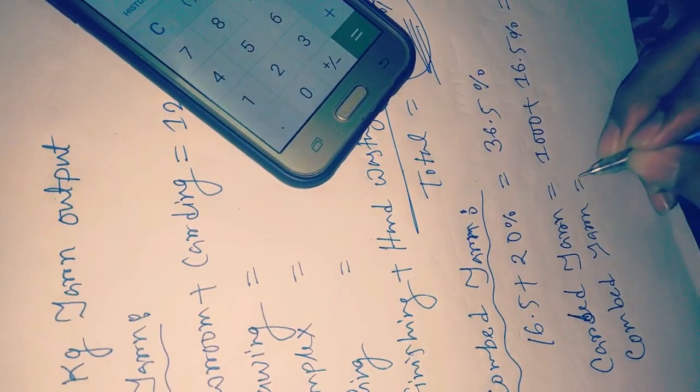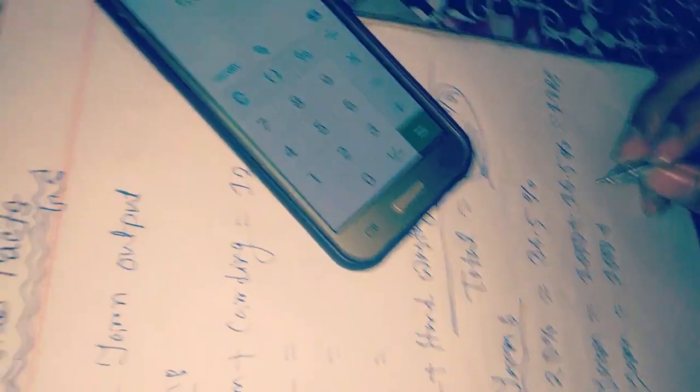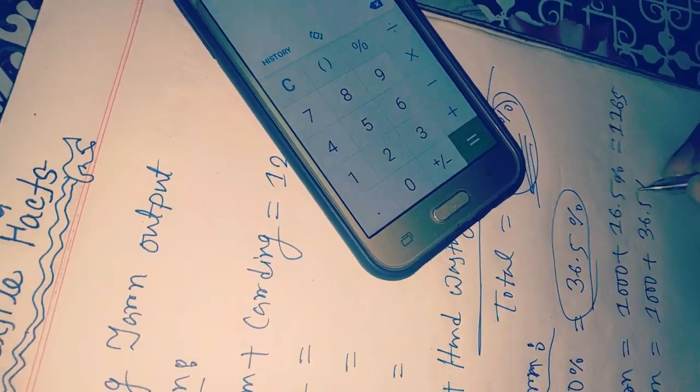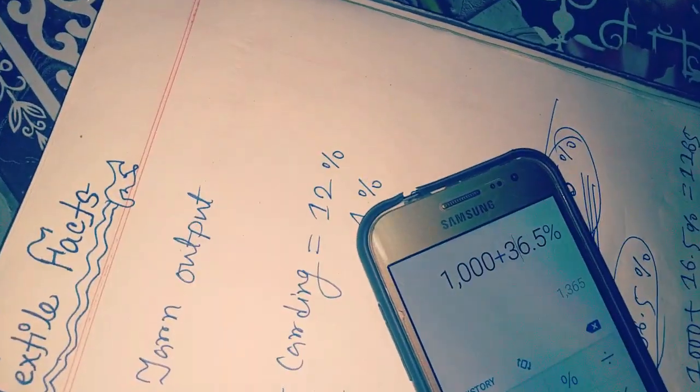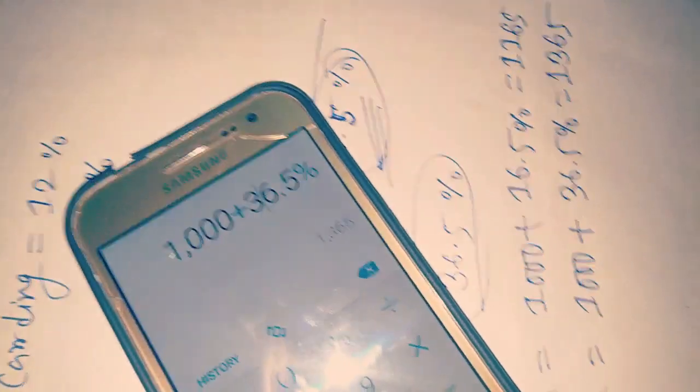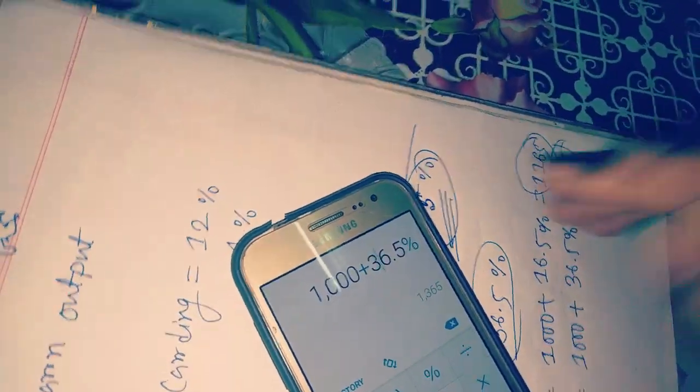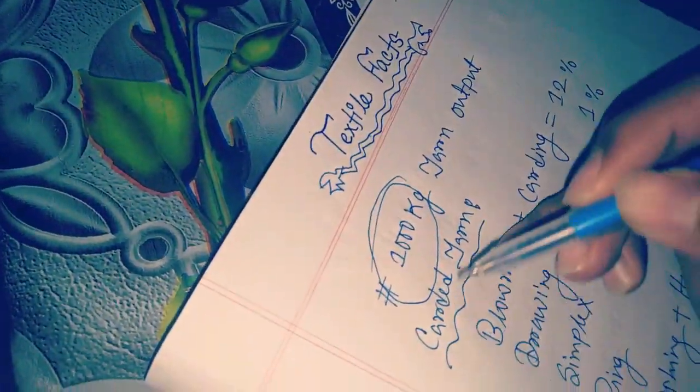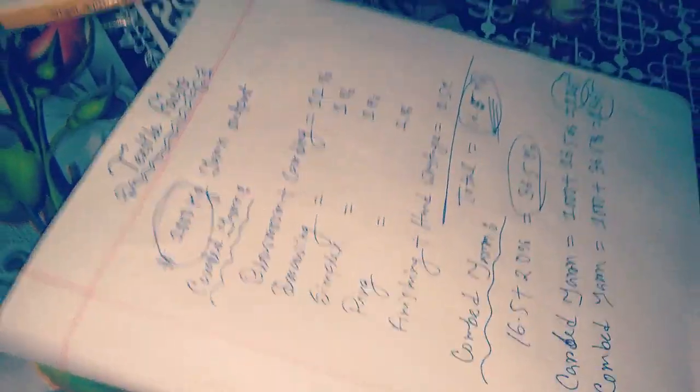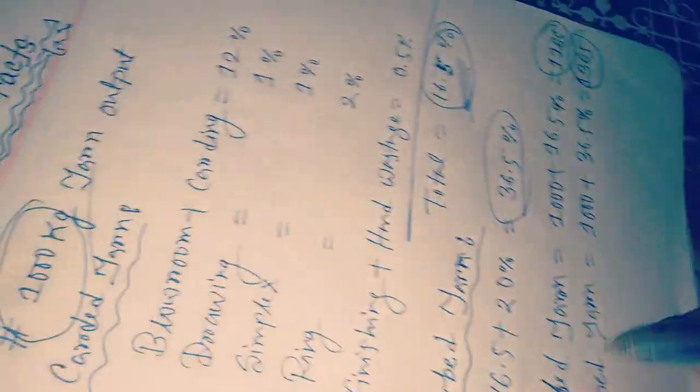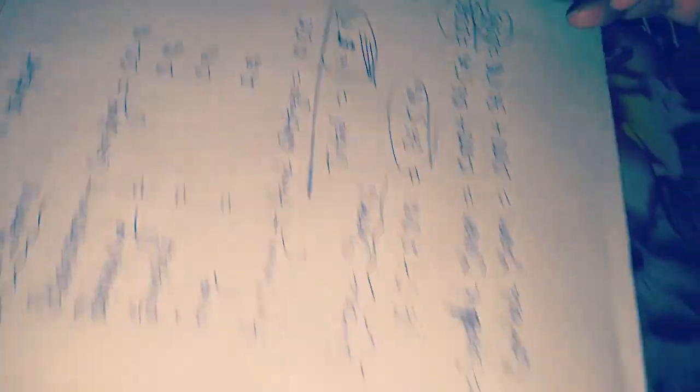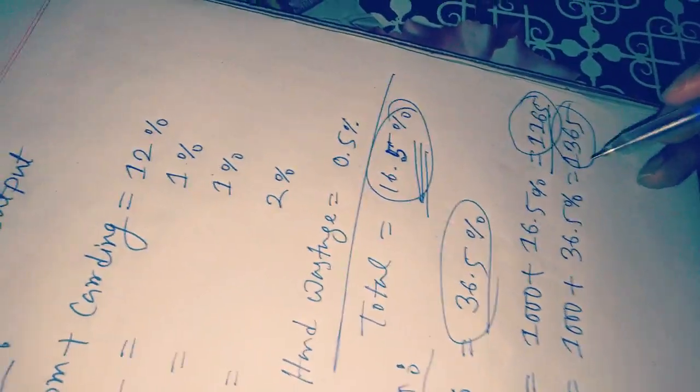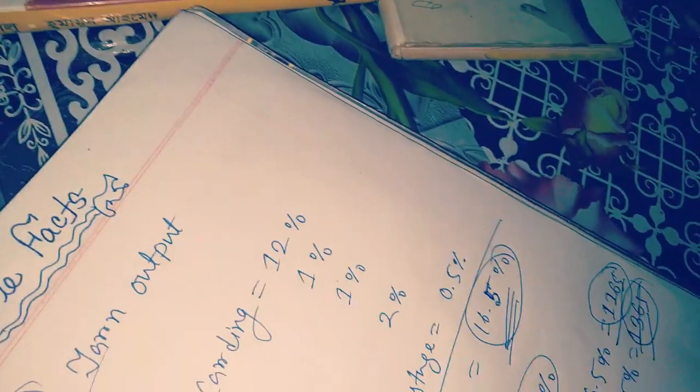Now we are calculating for combed yarn. If we change the value here to 36.5%, that means 1365 kg. This is the main raw material needed for producing 1000 kg yarn. So if you want to produce 1000 kg carded yarn, you must take 1165 kg input. If you want to produce combed yarn, you must take 1365 kg input. This is a normal calculation, but it can be different for different types of yarn.